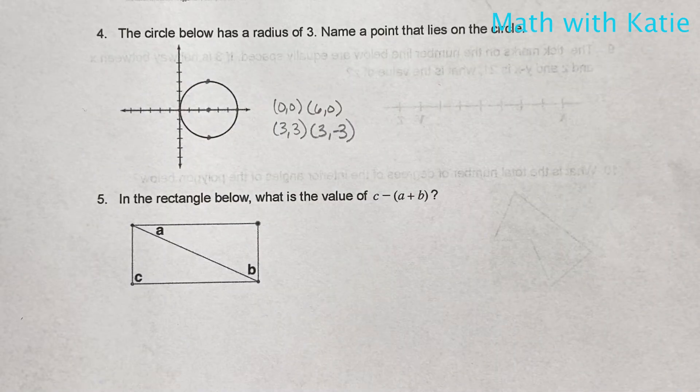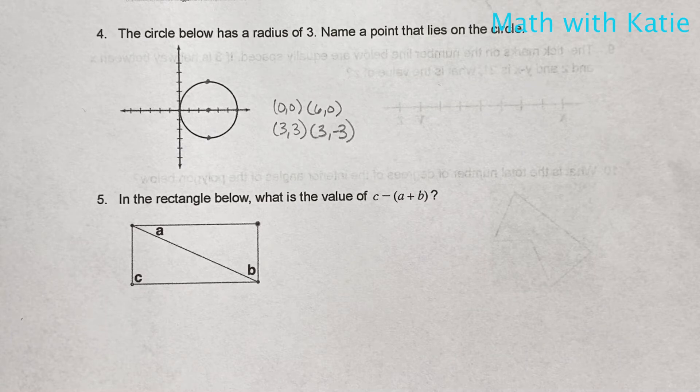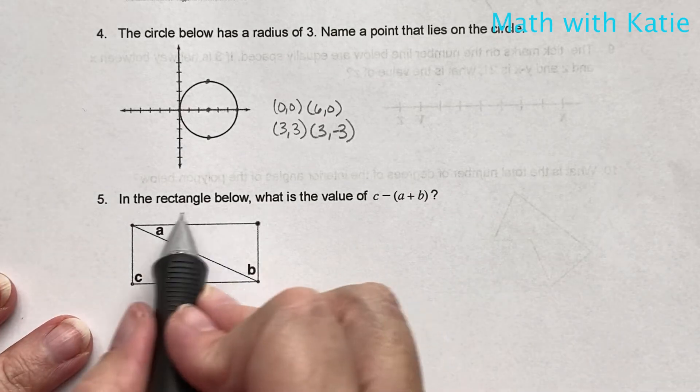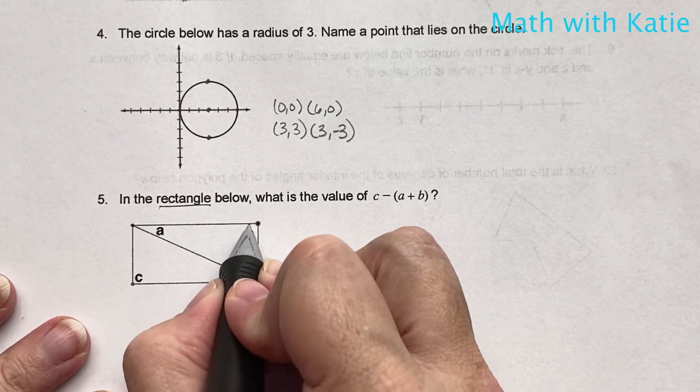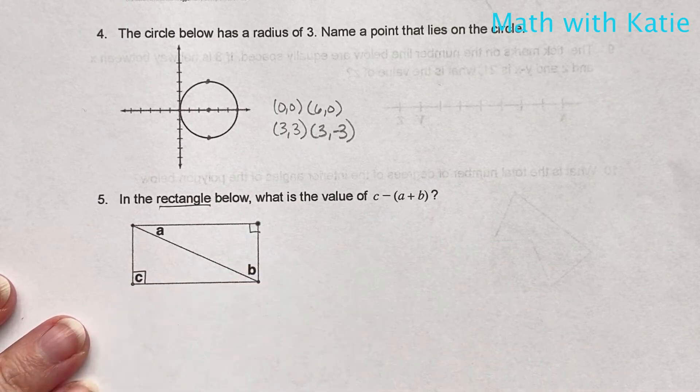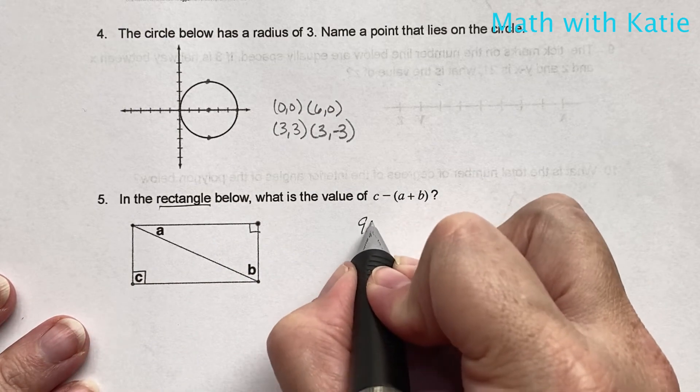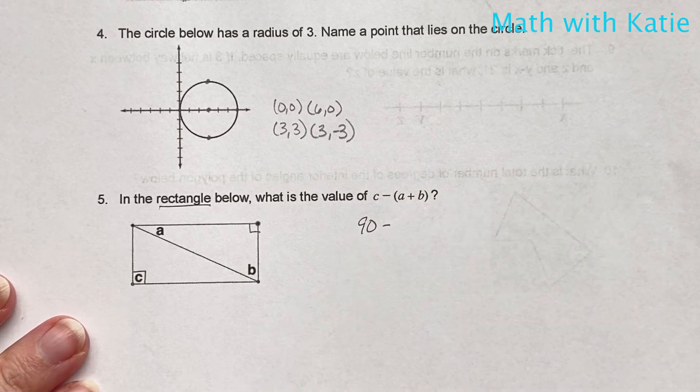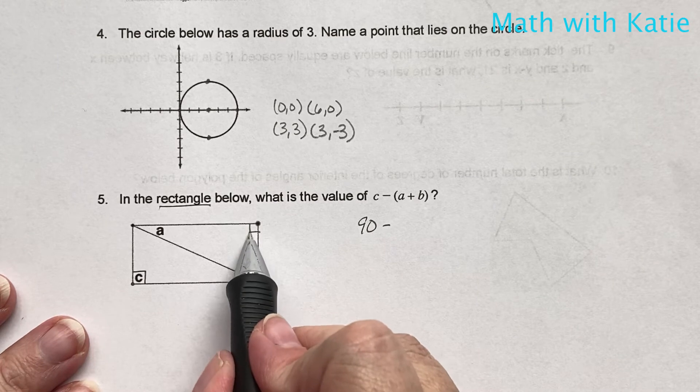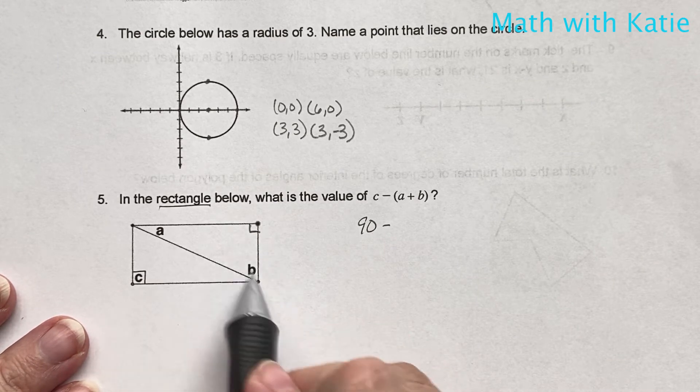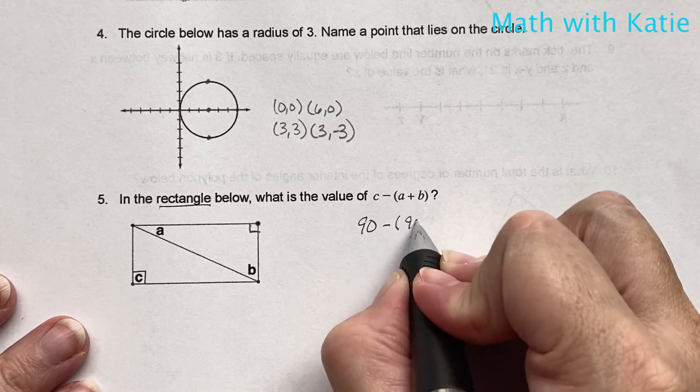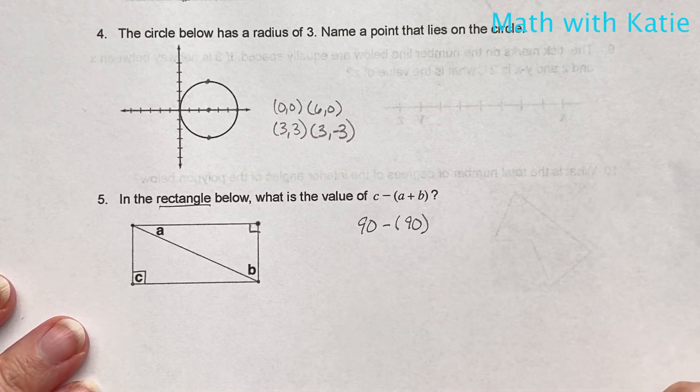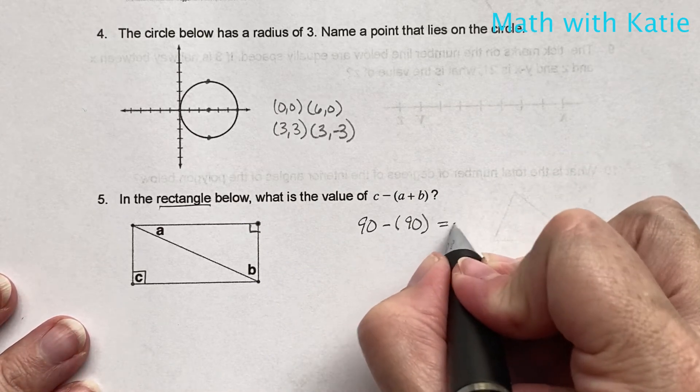In the rectangle below, what is the value of C minus A plus B? Since it's a rectangle, and they actually stated it's a rectangle, we know that these angles are 90 degrees. So we already know that C is 90. And also, since it's a rectangle and we know that a triangle equals 180, we also know that a plus b is also 90. So, in knowing that, our answer is 0.